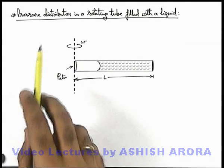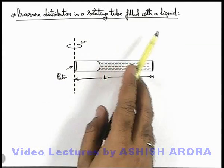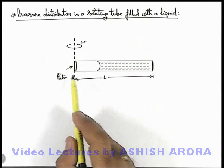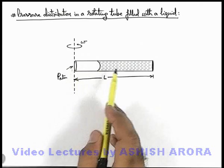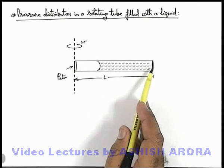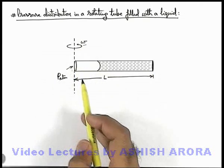Let us discuss pressure distribution in a rotating tube filled with a liquid. Here we have a tube of length L which is open at one end, containing some fluid, closed at the other end, and rotating at an angular speed omega.